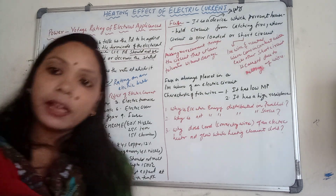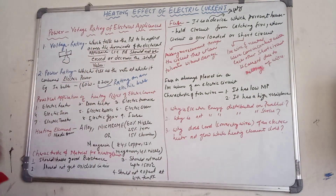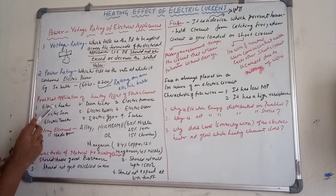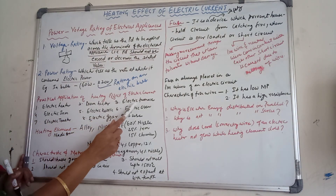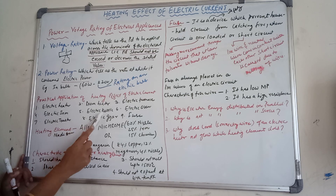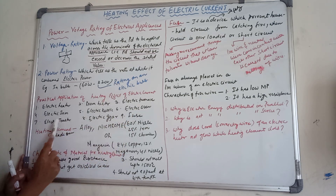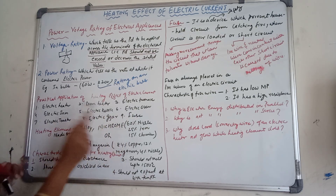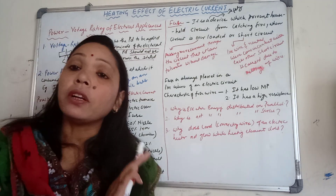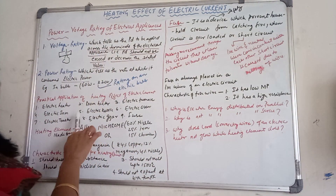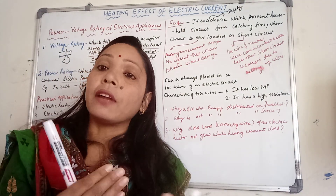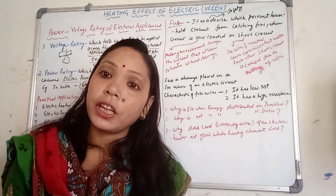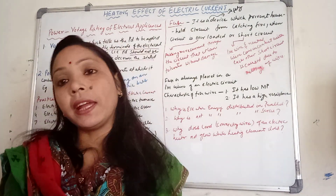Now see the practical applications of the heating effect of electric current. The first application is your electric heater, then room heater, electric furnace, electric iron, electric kettle, electric oven, electric toaster, electric geyser, and fuse wire. In all these applications, there is the conversion of electric energy into heat energy.